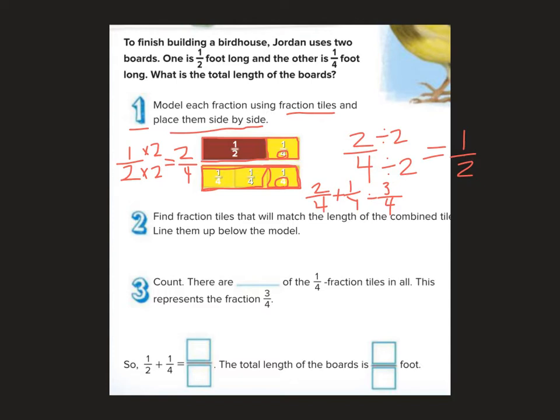Find the fraction tiles that will match the length of the combined tile, line them up below the model. Then count. There are three of the one fourth fraction tiles in all. One, two, three. This represents the fraction three fourths because I have three one fourth tiles. So one half plus one fourth is actually three fourths. That's so neat. The total length of the boards is three fourths of a foot.